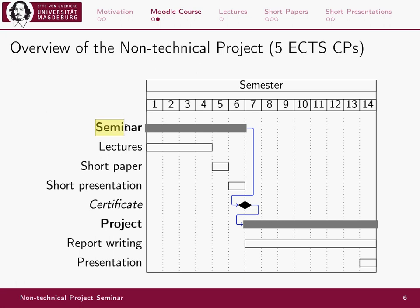The seminar is embedded into a larger non-technical project for which you get five ECTS credit points. The project first consists of the seminar, which runs over the first six weeks of the semester. In the first four weeks we have the lectures, after which you write your short paper, review each other's work, and then give short presentations. After successful completion of the seminar you get a certificate. Then you write a real — usually more technical — project report over the last eight weeks of the semester, and usually give a final presentation to complete the overall non-technical project.